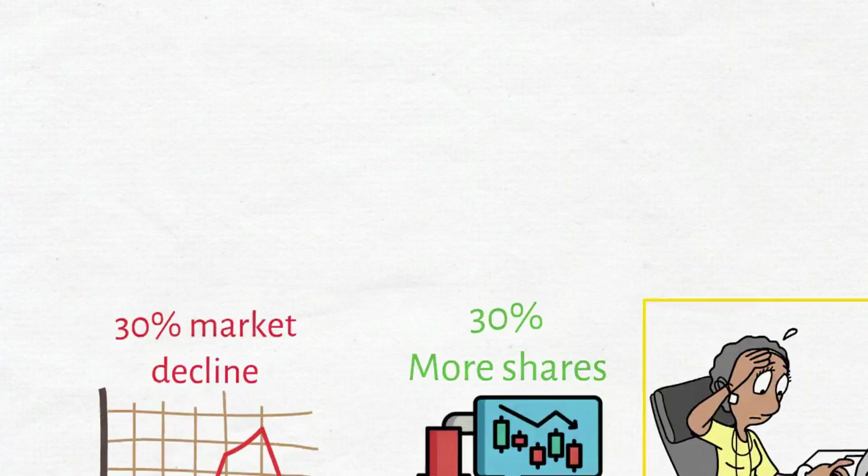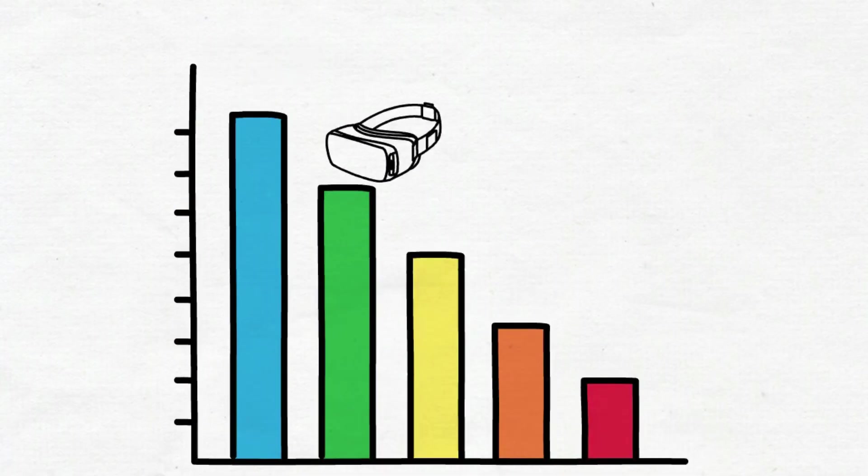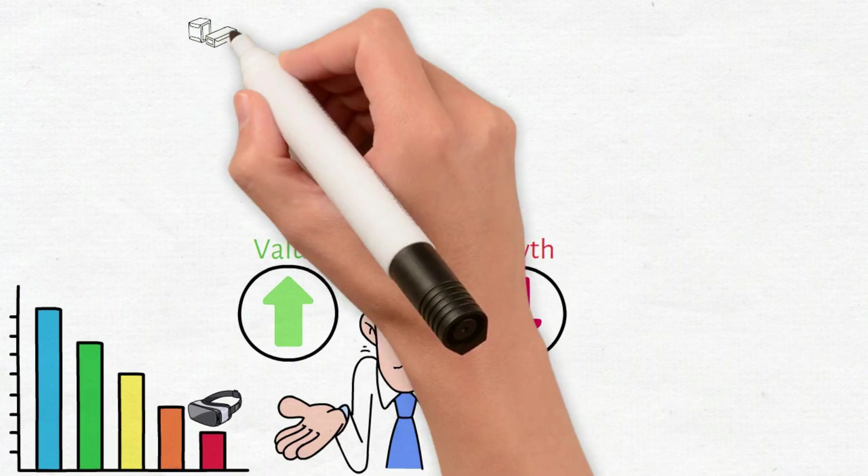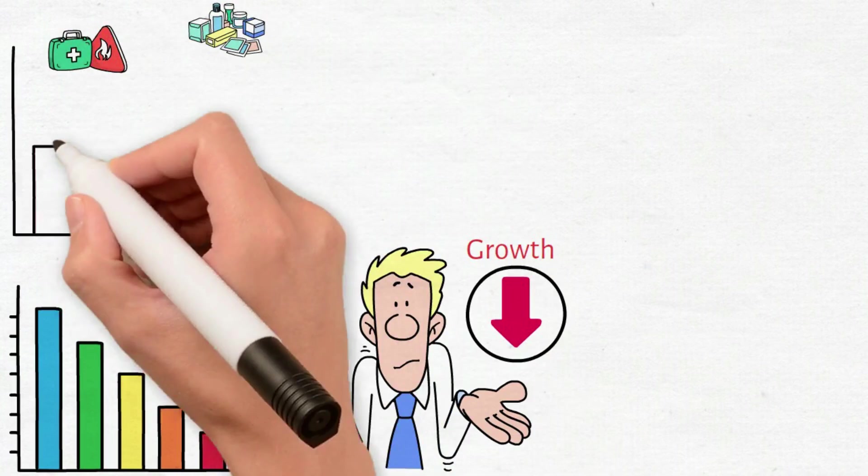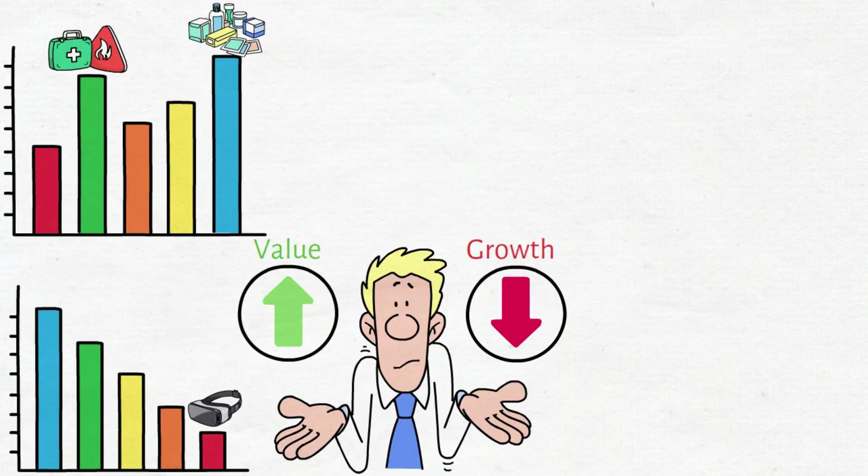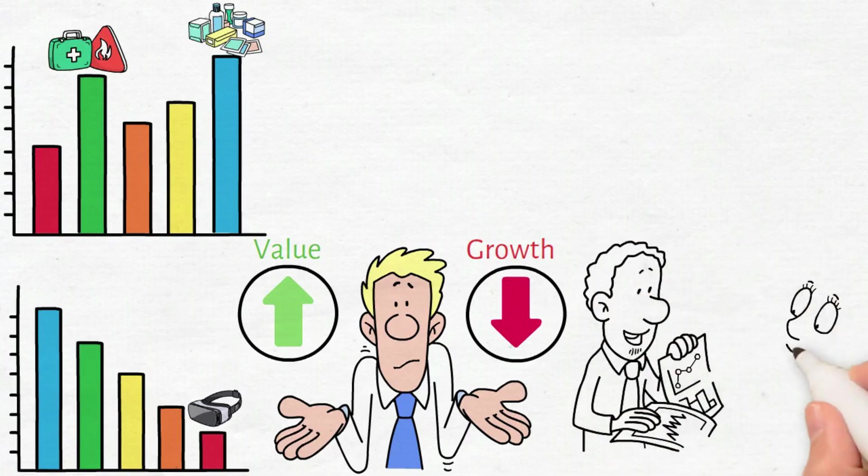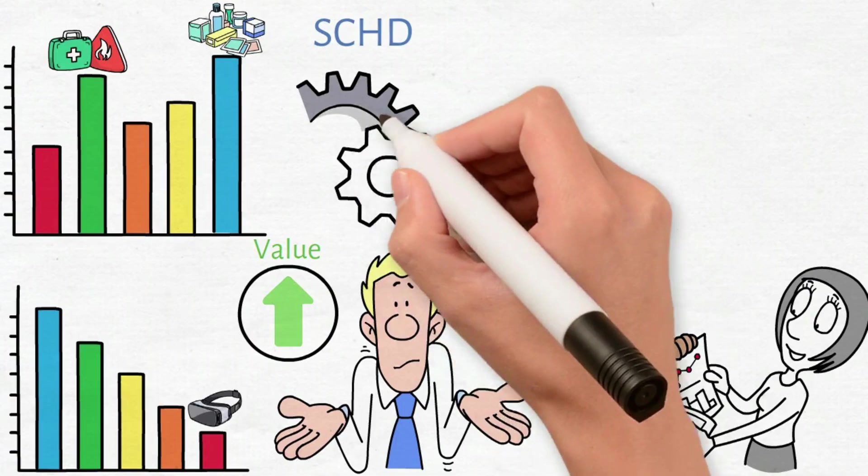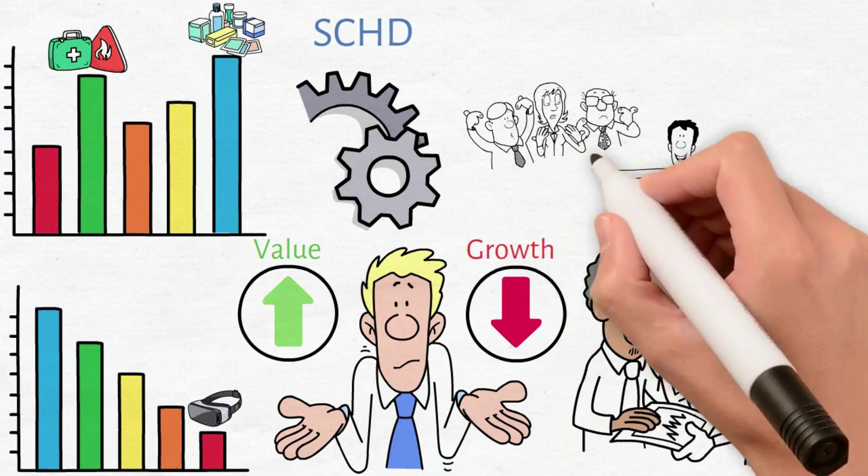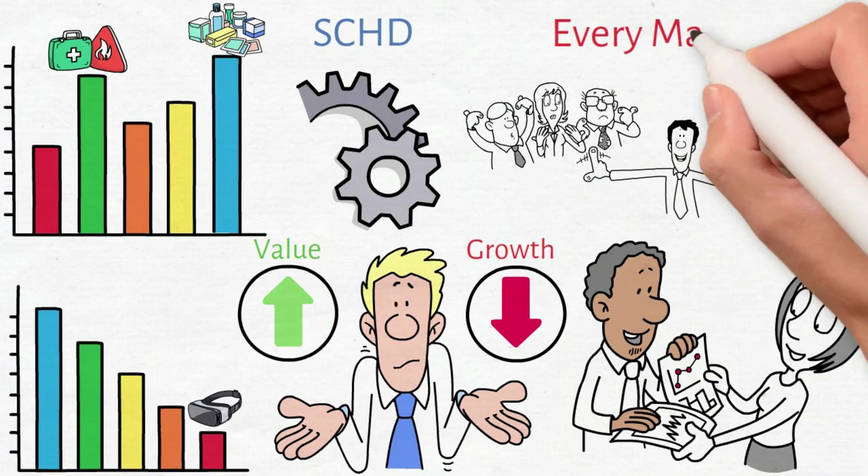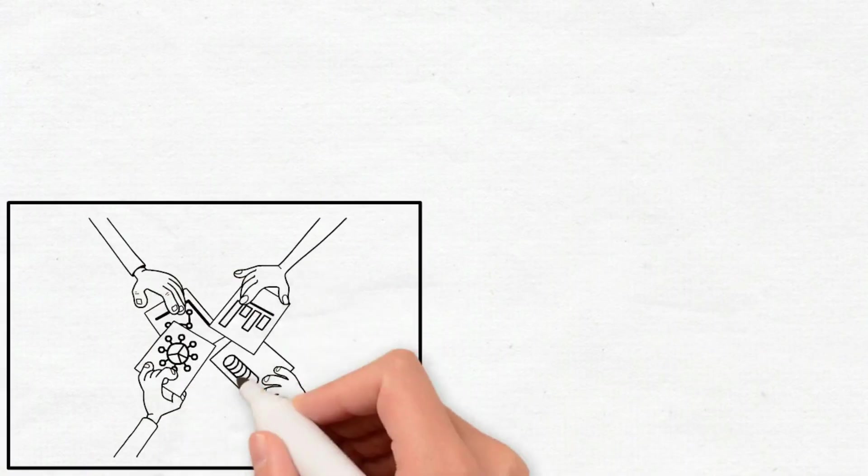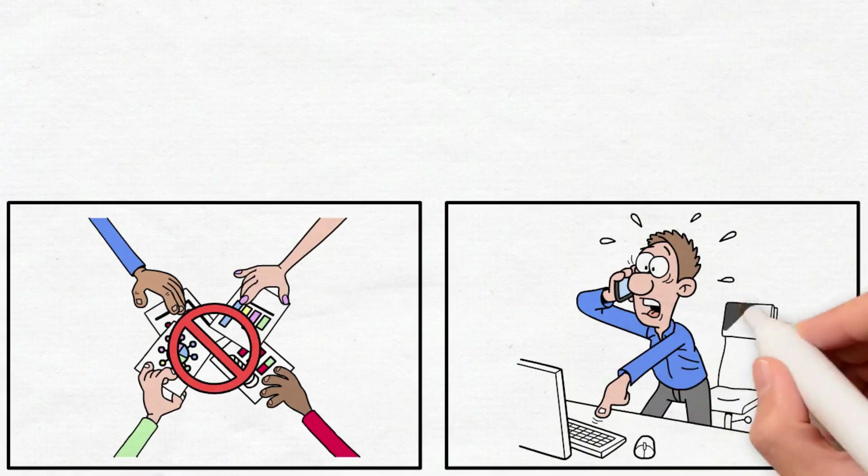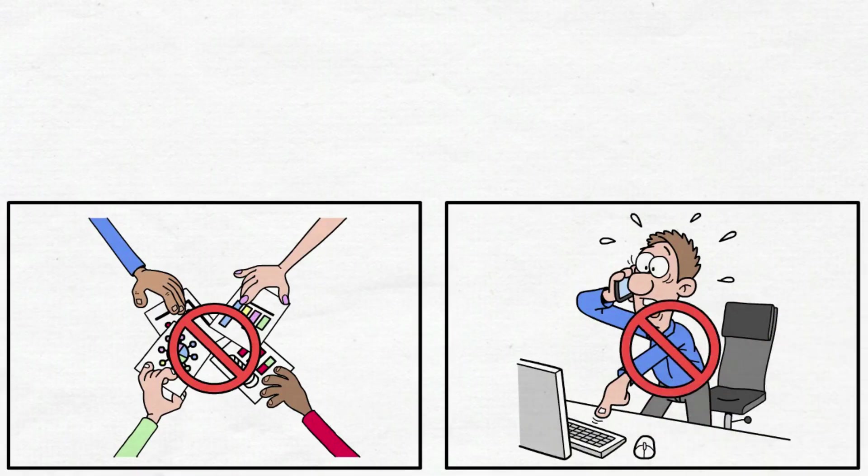Market rotations are accelerating. Tech dominates one period, then collapses the next. Value surges while growth craters. Materials and healthcare skyrocket after being previous losers. This volatility creates perfect conditions for income growth strategies. SCHD operates with an automatic advantage. The fund systematically removes underperforming companies and adds rising stars every March. You don't pick individual stocks. The methodology does it for you, eliminating emotional decisions and timing mistakes.